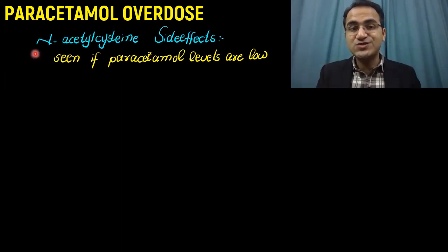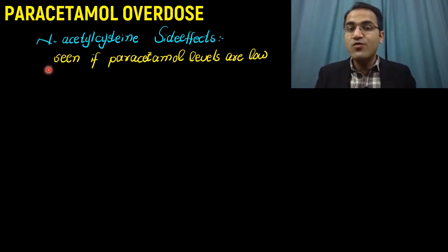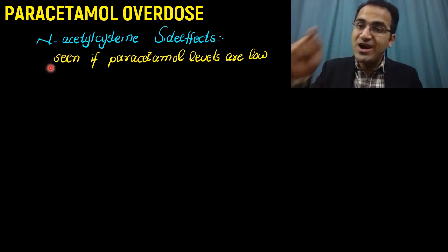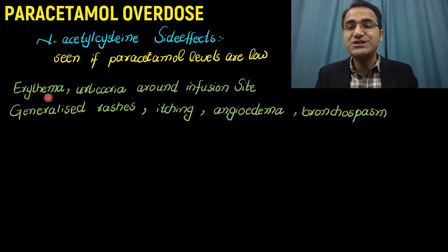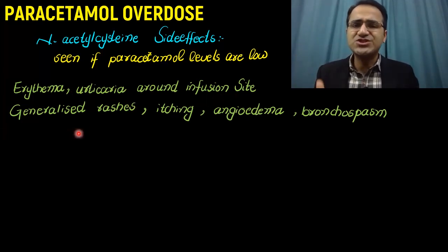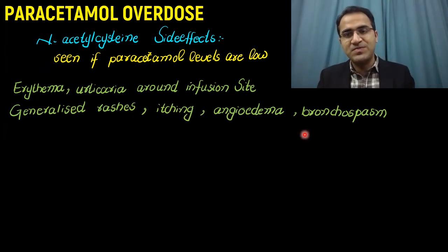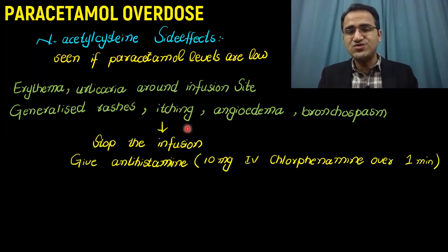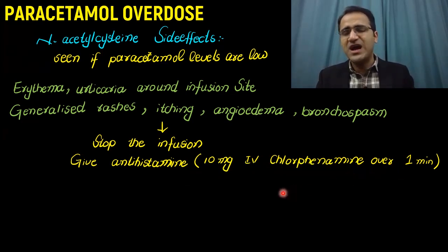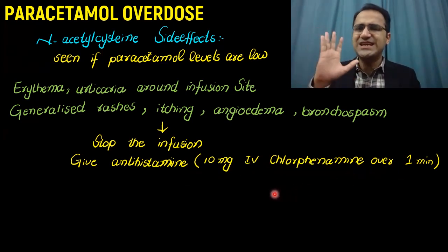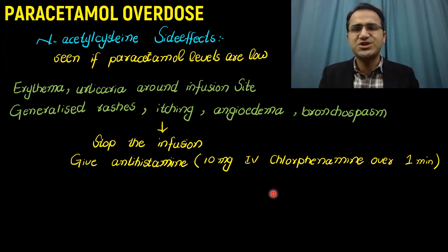There are certain side effects associated with N-acetylcysteine, commonly seen when paracetamol levels in the blood are low. After starting the N-acetylcysteine infusion, the patient might develop erythema, urticaria around the infusion site, generalized rashes, itching, angioedema, and bronchospasm — this is an anaphylactic reaction. In such cases, stop the infusion and give antihistamine: 10 mg IV chlorpheniramine over one minute. You can slowly restart the infusion once the patient's symptoms improve.